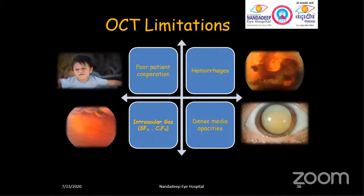Although OCT provides a very good diagnostic tool, there are a few limitations. In patients with excessive eye movements, like in nystagmus cases, it is very difficult to acquire an image. Even if the patient has poor fixation or poor vision, it becomes very tough. In conditions where there are hemorrhages or other abnormalities like vitreous hemorrhages, it is difficult to acquire an OCT scan. Even in the presence of intraocular gases or dense media, acquiring a good quality OCT scan can be difficult.